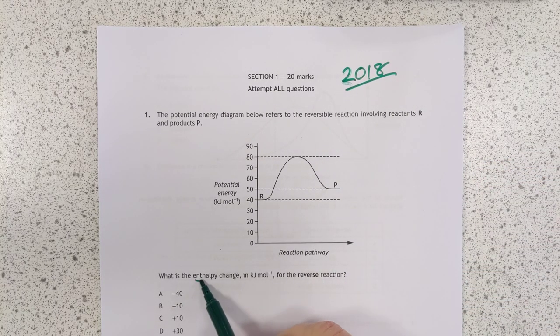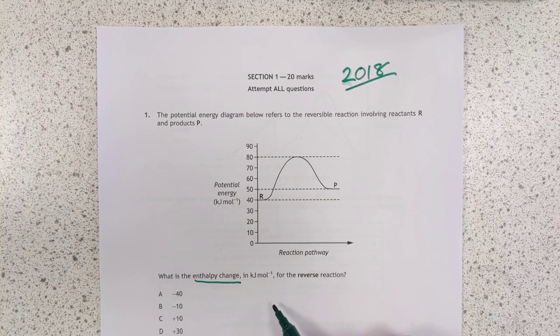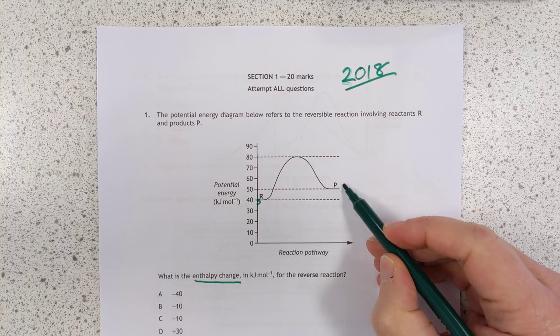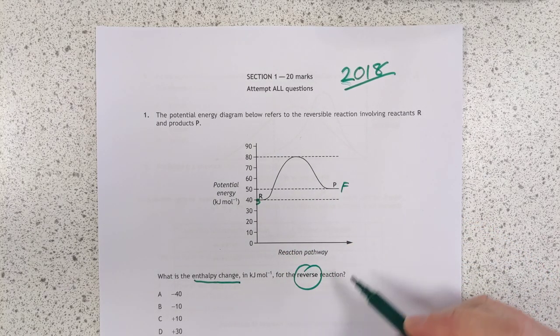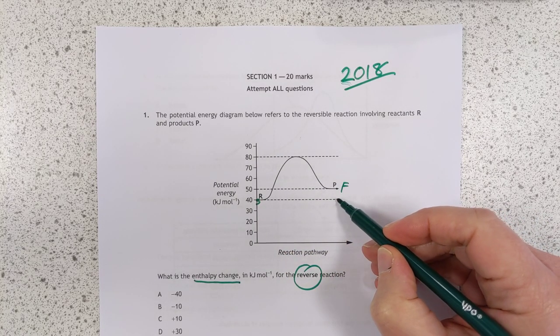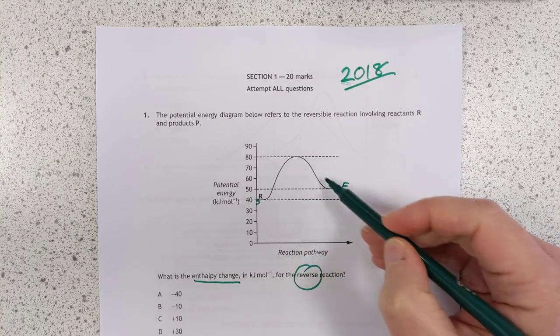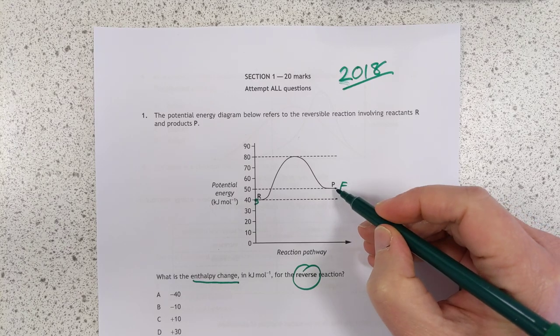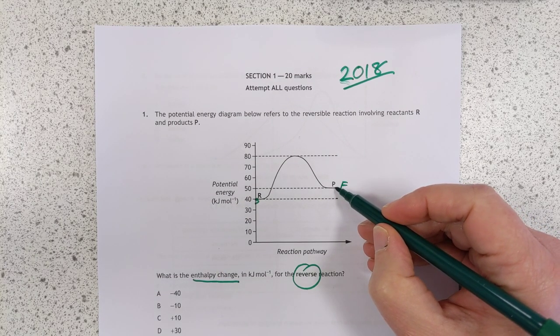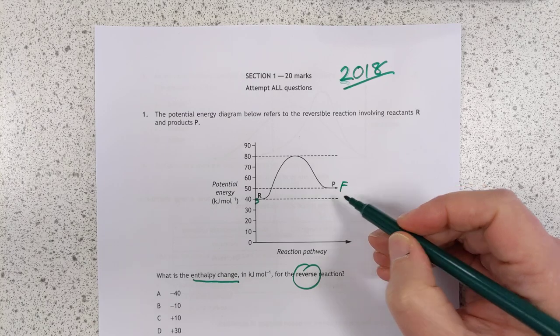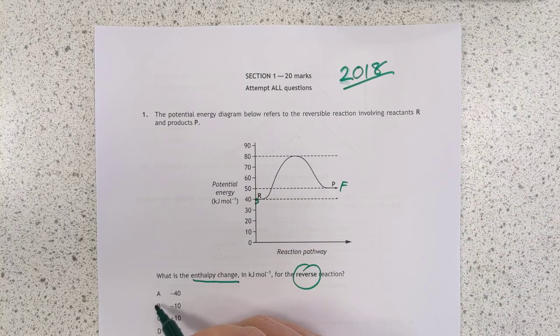Enthalpy change is defined as the difference in enthalpy from where you start to where you finish. However, they've got reverse in bold here. So we're starting here, we're ending here. This is a complete red herring. That's the activation energy up here. Enthalpy change is reactants and products. So we're starting effectively at 50 and going to 40, which is a drop of minus 10.